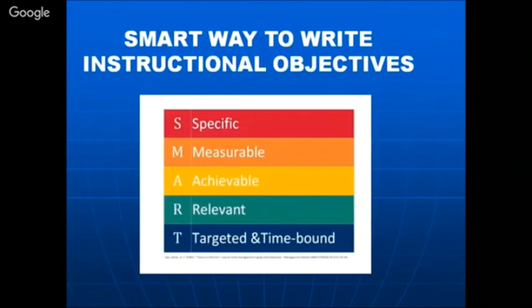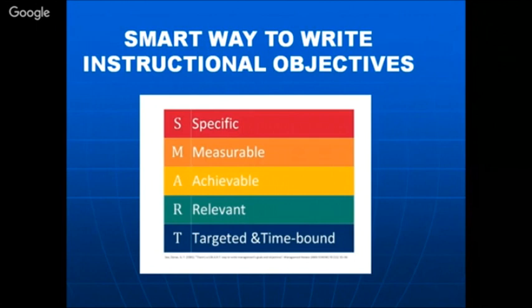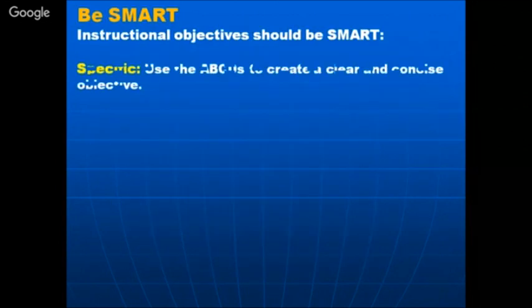There is a SMART way to write the instructional objective. SMART stands for: S — Specific, M — Measurable, A — Achievable, R — Relevant, T — Targeted and Time-bound. If you remember SMART — specific, measurable, achievable, relevant, and time-bound — this is another way to think about writing your instructional objectives. Specific means use ABCD to create a clear and concise objective.